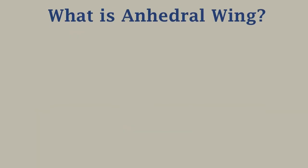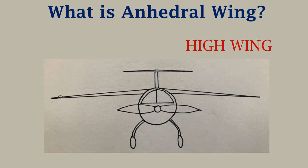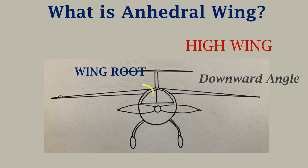Now let's see what is an anhedral wing. Anhedral wings are usually found in high wing configuration. These wings have a downward angle. So if we look at the wing root and the wing tip, the wing tip will be located below the wing root.